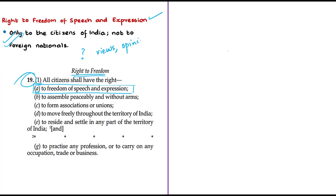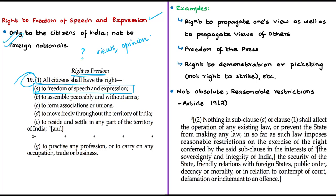This freedom implies that every citizen has the right to express their views, opinions, beliefs, and convictions freely by word of mouth, writing, printing, through picturing, or in any other manner. The Supreme Court has given a list of freedoms considered as freedom of speech and expression, including the right to propagate one's own views as well as those of others, freedom of the press, commercial advertisements, right to demonstration, and so on. On the whole, freedom of speech and expression is a liberty to communicate with others and an immunity from interference — a person may write or say whatever they please as long as they do not infringe any law or the rights of others.